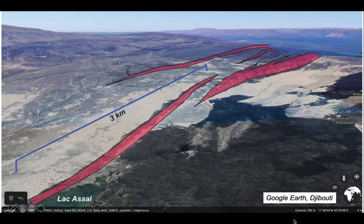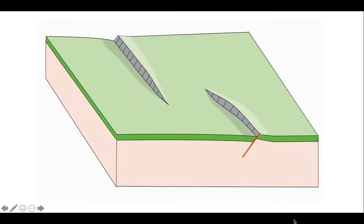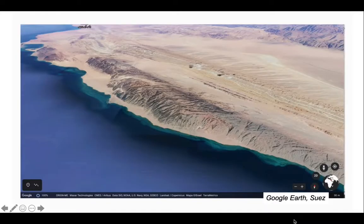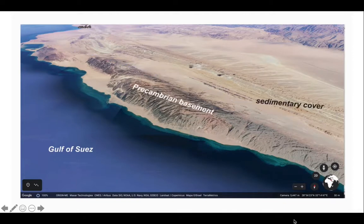The relay ramp. Let's go to another example. Now we're going to stay in the region but move further up to the Red Sea margin to here on the Gulf of Suez. We look at a view of about 30 kilometers long in here along the eastern shore of the Gulf of Suez. It's in Sinai geology. We have some Precambrian basement lifted up and its sedimentary cover.